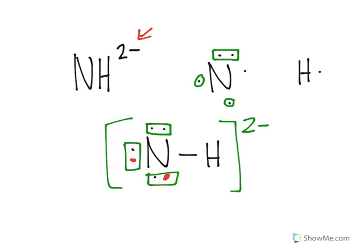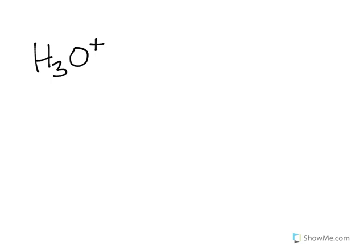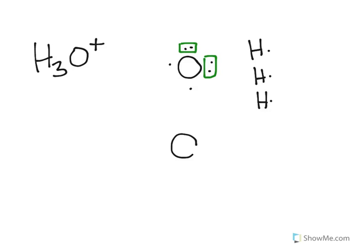Let's take one last example: the ubiquitous hydronium ion. We have an oxygen with six valence electrons around it, and then we have three hydrogen atoms — one, two, three. Again, let's go ahead and try to put all the puzzle pieces together first until we can't put it together anymore, and then figure out where we need to make adjustments.